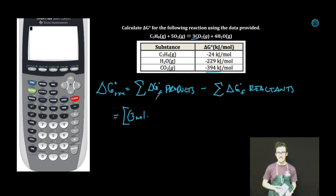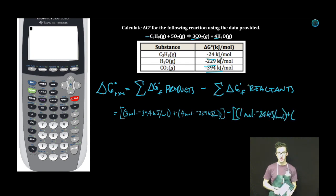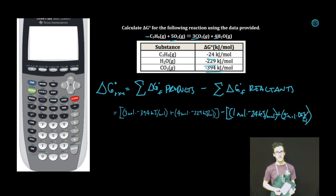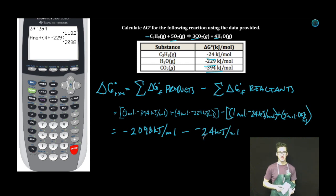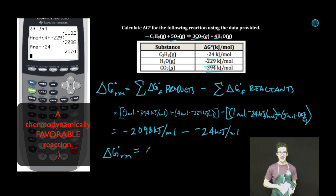3 moles CO2 gas plus 4 moles H2O gas minus 1 mole propane plus 5 moles oxygen. Oh my goodness, where's oxygen? Remember Gibbs free energies of formation of elements are zero. Negative 2,098 kilojoules per mole minus negative 24 kilojoules per mole. Back to the calculator. The Gibbs free energy change of the reaction is negative 2,074 kilojoules per mole.